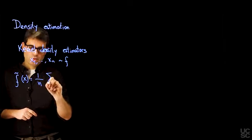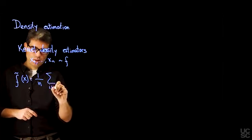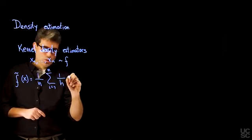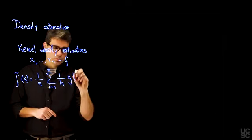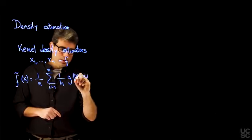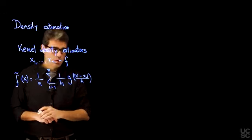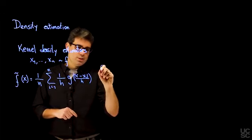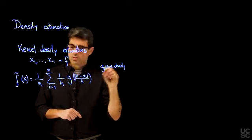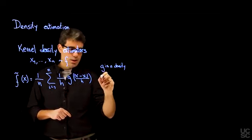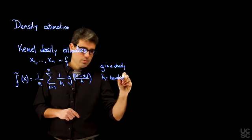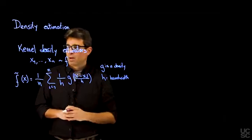And that estimator has a very particular form. It takes the form 1 over N sum from I equals 1 to N of 1 over H times G of X minus XI divided by H, where G is the density of your choice and H is called the bandwidth.